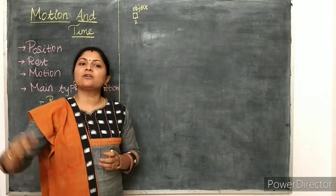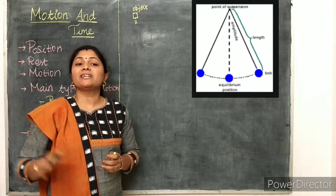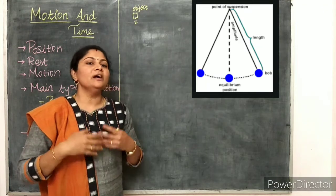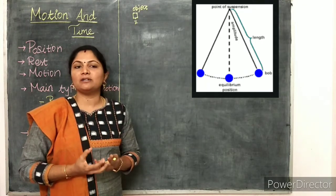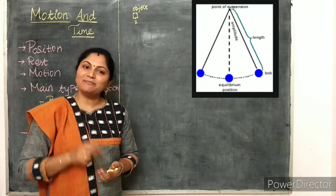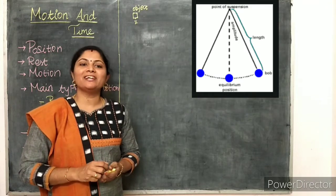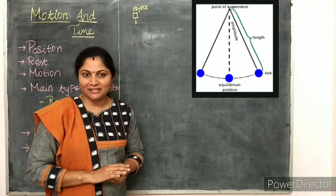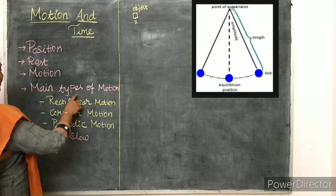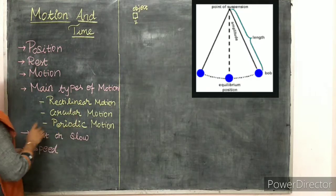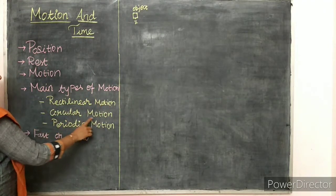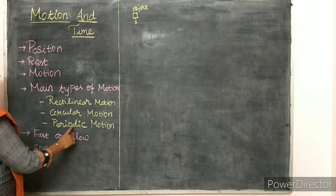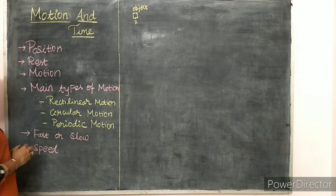The oscillations of a simple pendulum are also a periodic motion — I will explain the concept of the simple pendulum and what is meant by time period later in the same lesson. So, rectilinear motion, circular motion, and periodic motion are the main three types of motion.